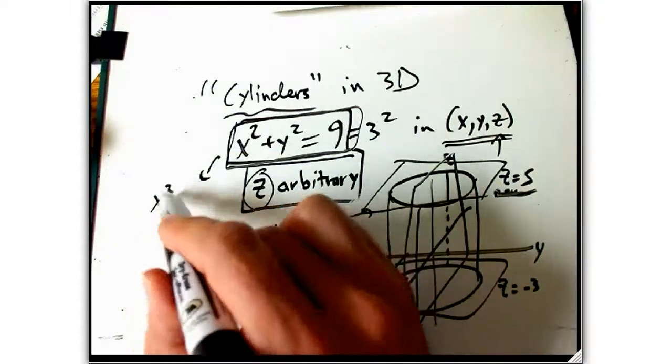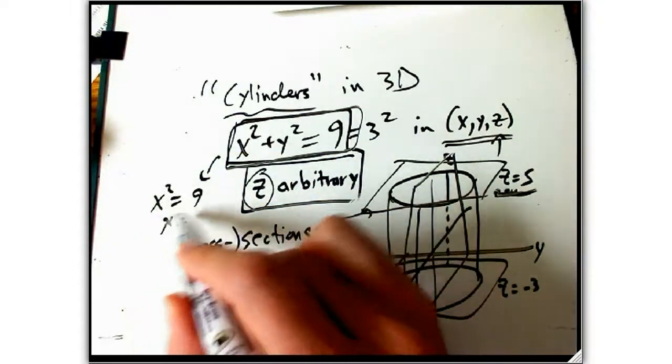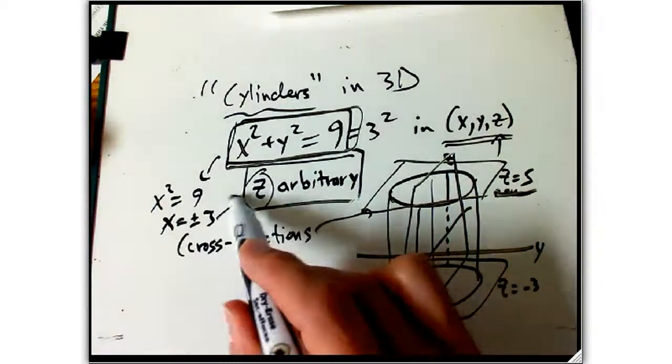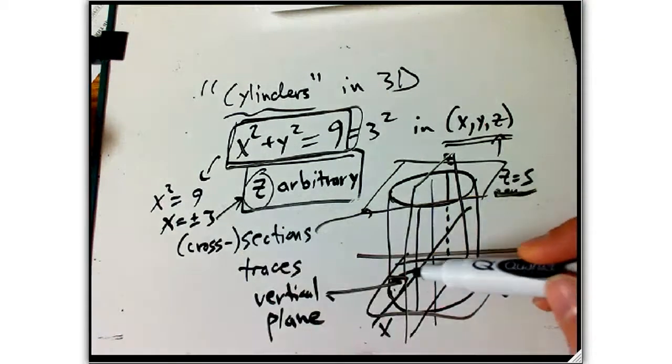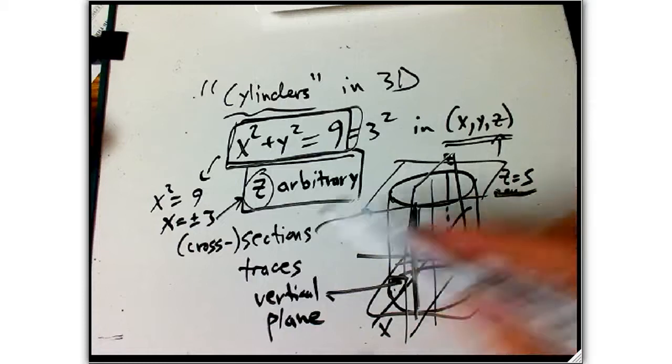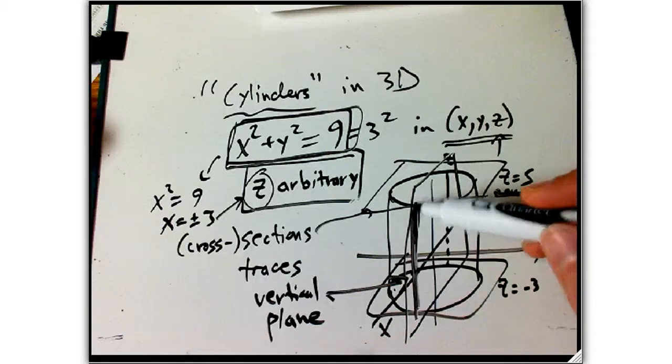If you set y equals 0, then x squared equals 9, or x equals plus or minus 3. That seems to be two points, but remember, it's x equals plus or minus 3, and z is anything. And so that's the forward part of this cylinder, the front part. It's just a line where x is 3, y is 0, and z is anything.